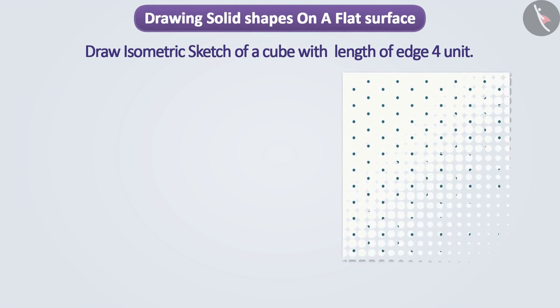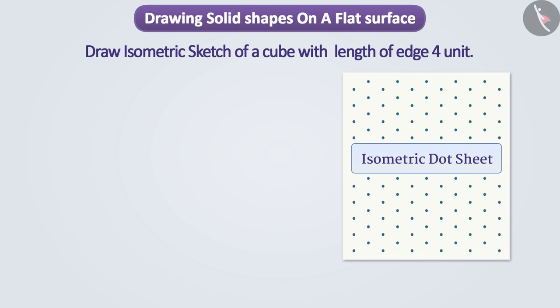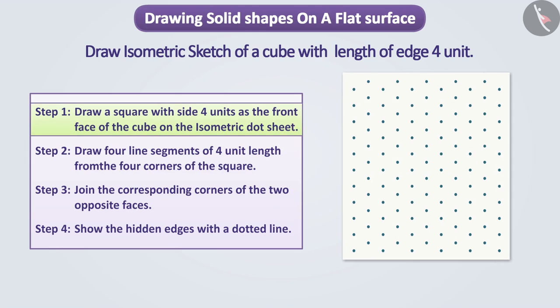We use dotted isometric sheets to draw isometric sketch. With the help of this sheet, we will draw isometric sketch. Step 1. First of all, we will draw a square of 4 by 4 units of edges to show the front face.